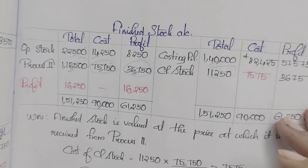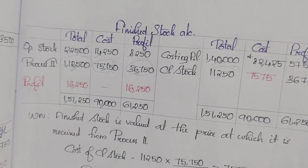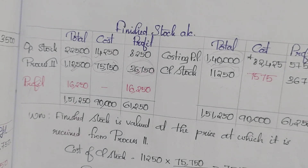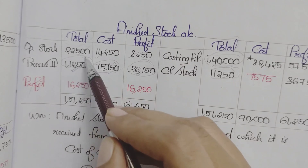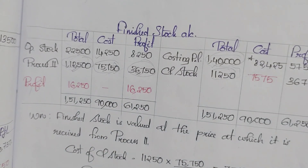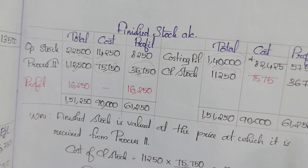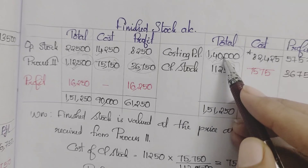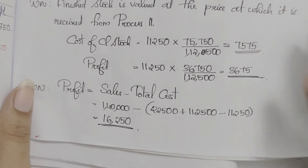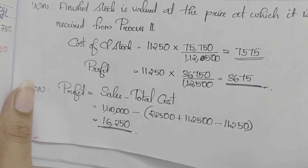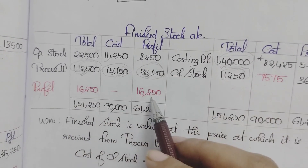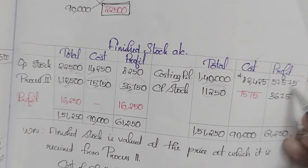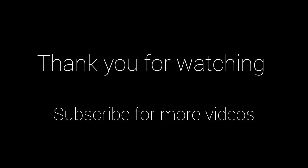By balancing the total column we get the profit. Cost of sales = opening stock + Process 2 transfers − closing stock. Sales are 1,40,000, which represents cost of sales. We get a profit of 16,250. The balancing figure in the cost column gives the cost of sales, and overall profit is derived from that.